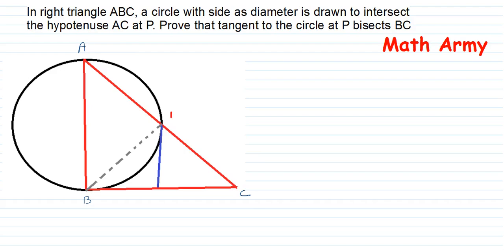Let me write P here. What I am supposed to prove? I am supposed to prove that the tangent at P bisects BC. The meaning of bisects is that BC is divided into two equal parts. I have drawn the tangent in blue color and named the point Q. I need to prove BQ is equal to QC.